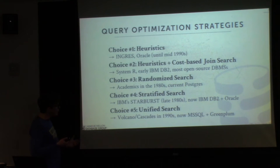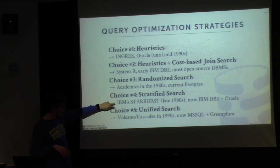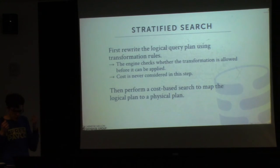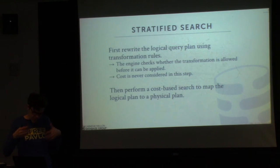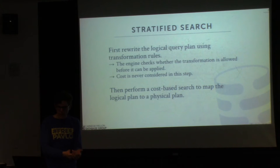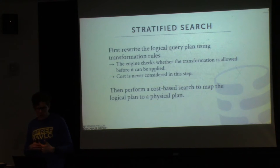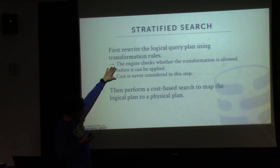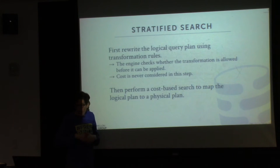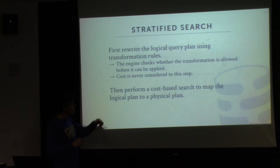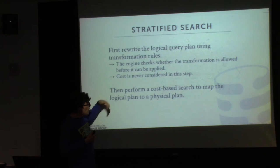The stratified search takes a logical query plan and applies heuristic transformations directly — the same kind Ingress and Oracle used — like predicate pushdown and limit pushdown. These transformations don't consider the cost model at all; you just have hard-and-fast rules you always want to apply. Then, once you do that, you go into the optimizer phase for the actual cost-based search.